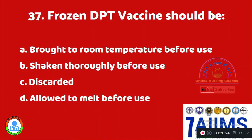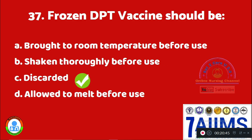Question 37: Frozen DPT vaccine should be: Option A: brought to room temperature before use. Option B: shaken thoroughly before use. Option C: discarded. Option D: allowed to melt before use. The right answer is Option C — it should be discarded.